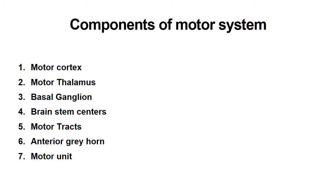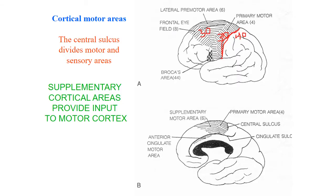Many structures are involved in motor function. These include the motor cortex, motor thalamus, basal ganglia, brainstem centers, motor tracts, anterior horn gray matter, and the motor unit. The motor cortex areas are centered around the central sulcus: the postcentral gyrus contains the sensory area, and the precentral gyrus contains the primary motor area. A few centimeters away are the supplementary motor area and the premotor areas, located superiorly and inferiorly.